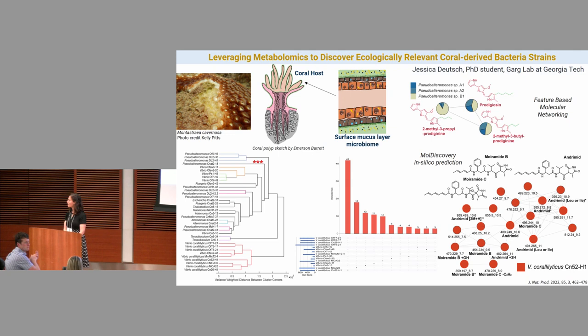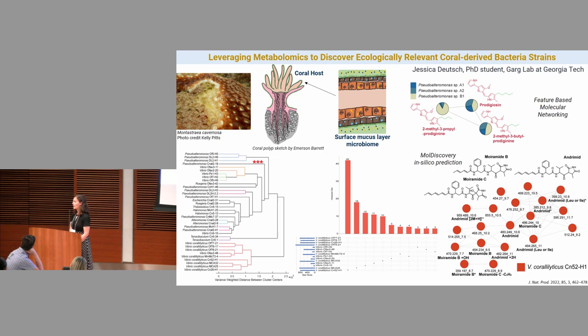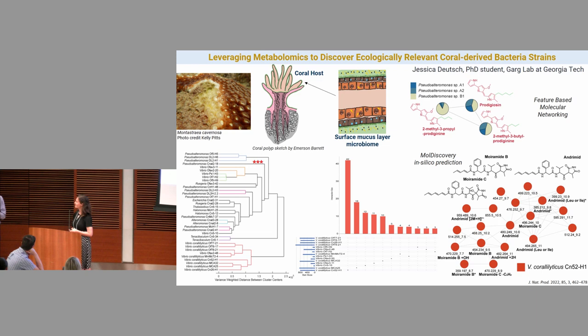Andromid is a known virulence factor from Pacific-derived Vibrio coralliilyticus, and its presence in our Atlantic-derived Vibrio alerted us to this metabolite within our reefs. Feature-based molecular networking also enabled annotation of andromid analogs and biosynthetic precursors, highlighting the value of in silico tools within LC-MS metabolomics workflows. The data acquired on coral-derived bacteria will continue to serve as a resource to enable insight into coral-microbiota relationships. Is this a disease new to corals? This is considered a novel disease first observed in 2014, falling under white plague diseases; it is distinct from bleaching caused by warming.